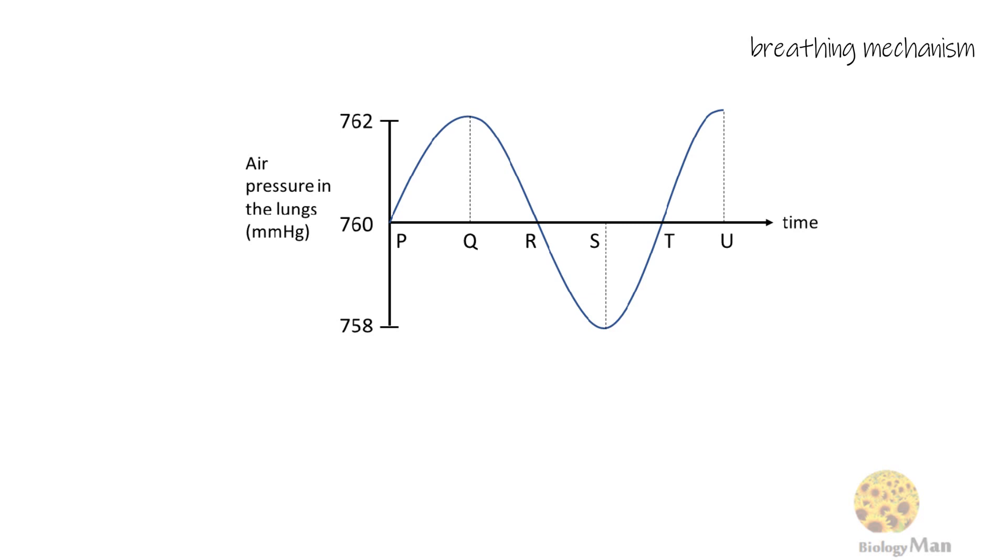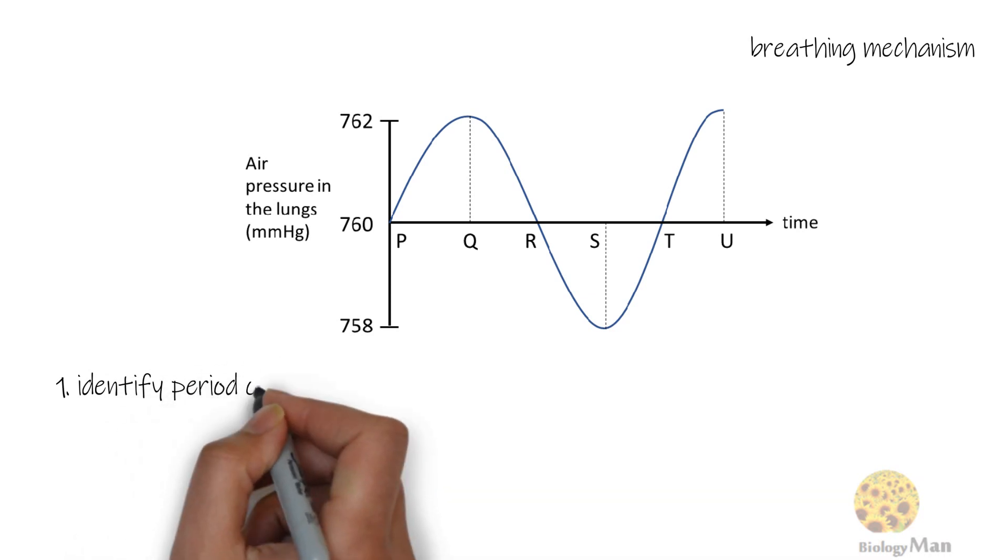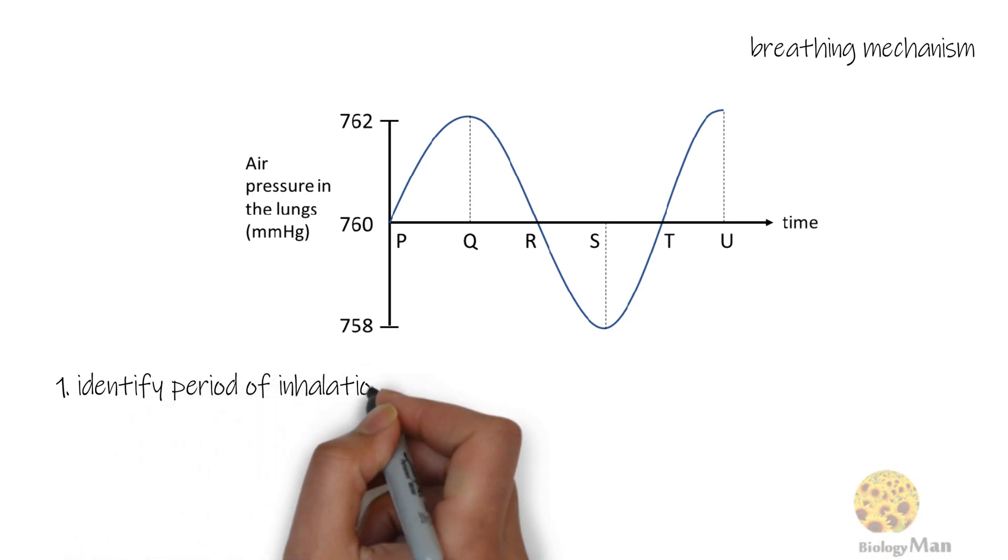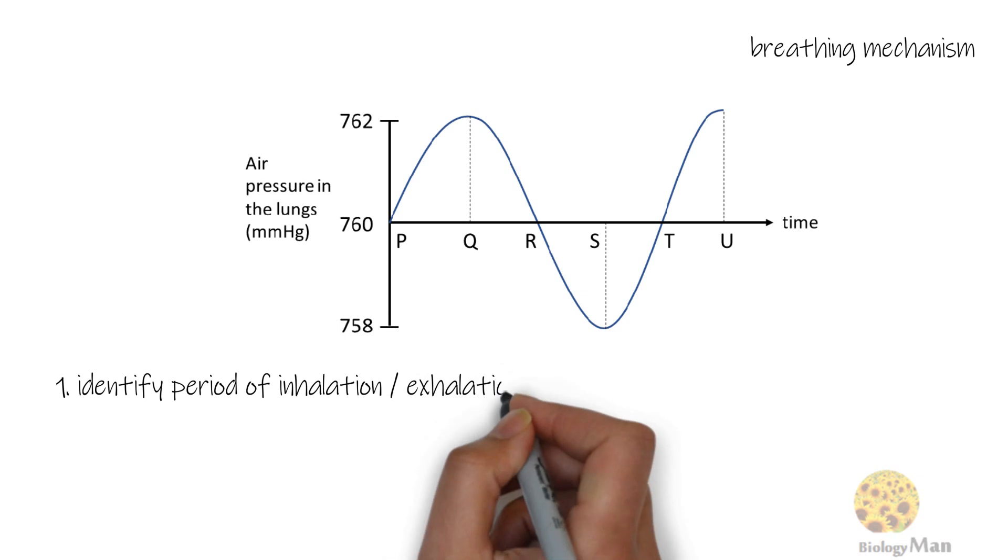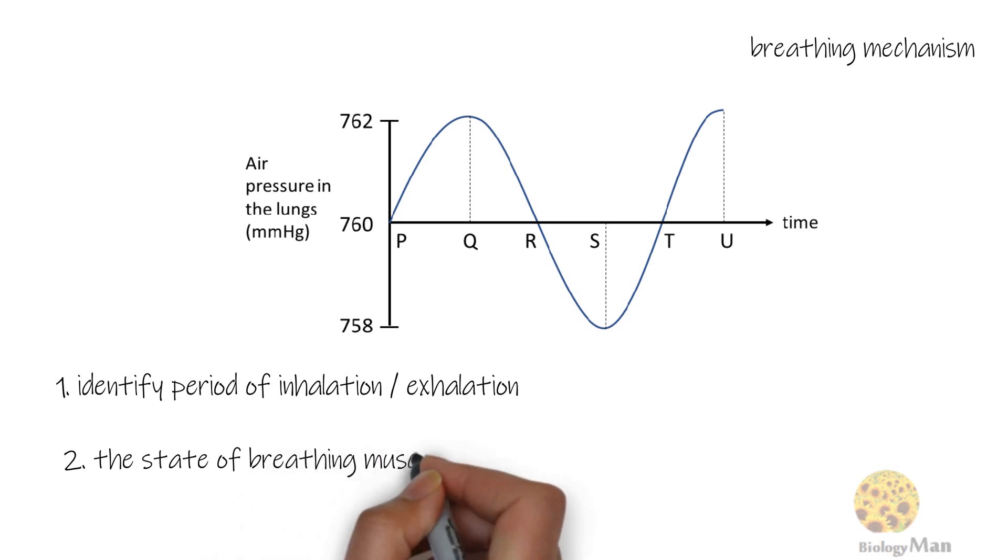There are two common types of HKDSE questions related to this curve. One type of the questions asks you to identify the period of time for inhalation or exhalation. In another type of questions, you need to point out the state of the breathing muscles.